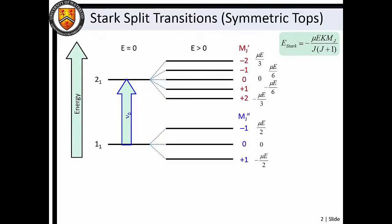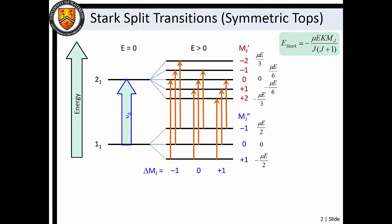To see how the Stark effect influences rotational transitions, we must account for splitting in both the excited and ground states. We can then evoke our delta m sub j equals plus or minus one or zero selection rule to determine which transitions are possible.